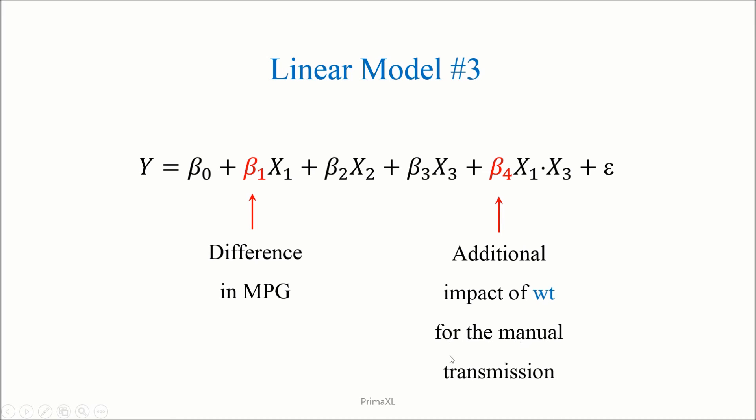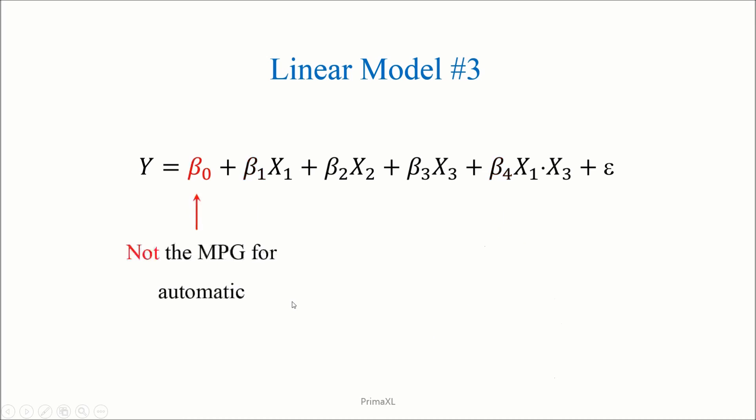We can notice that beta1 is still the difference in the miles per gallon of the different transmission types. Also here, the intercept beta0 cannot be interpreted as the baseline MPG for the automatic transmission. Okay, let's go back once more to the Excel spreadsheet and fit the model coefficients.